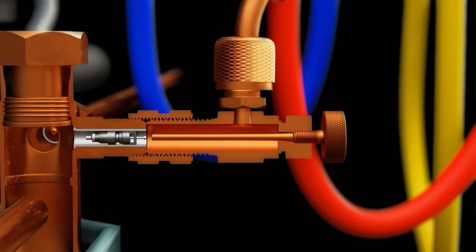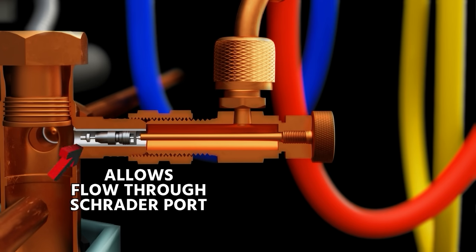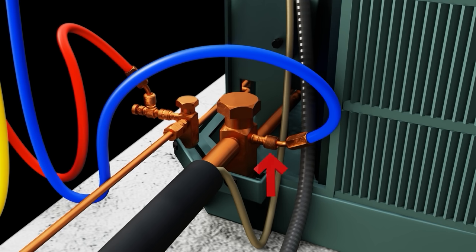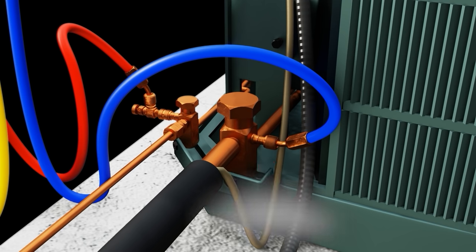Here we show how when you turn the core depressor clockwise, that depresses the core, pushes in the core, allowing flow through the Schrader port, allowing us to measure the pressure on the liquid side. On the other side, on the suction side, we're simply using the core depressor inside the hose end to depress the Schrader.